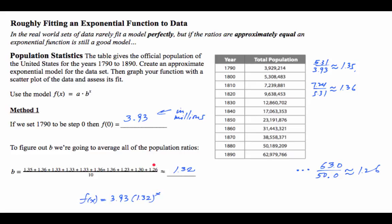Therefore, f(x) is 3.93 times 1.32 to the power of x.